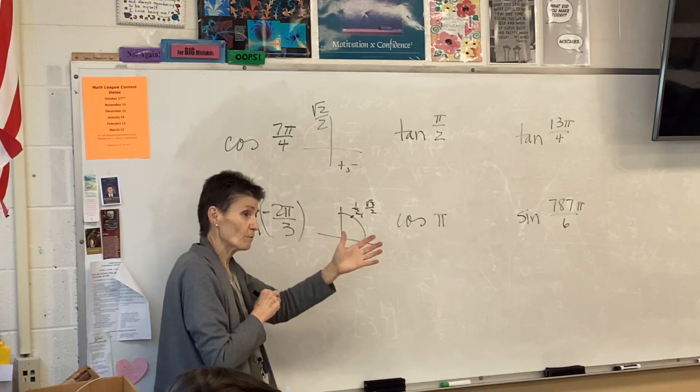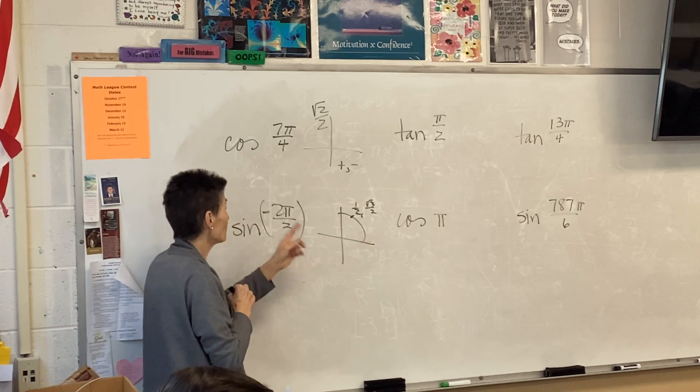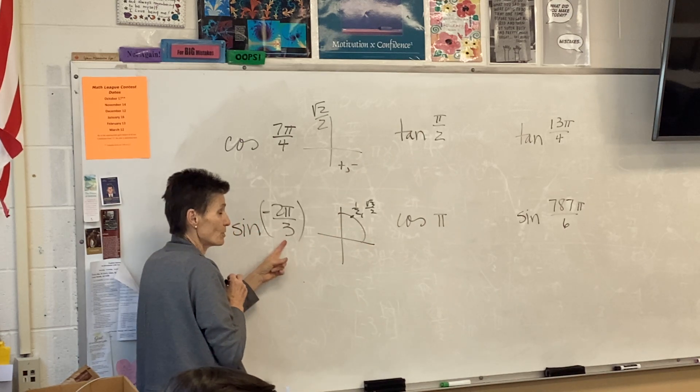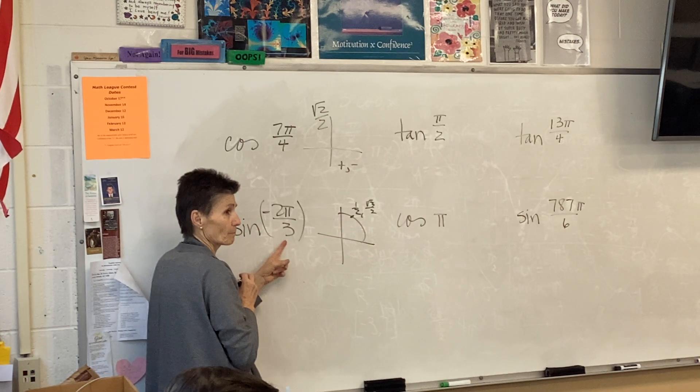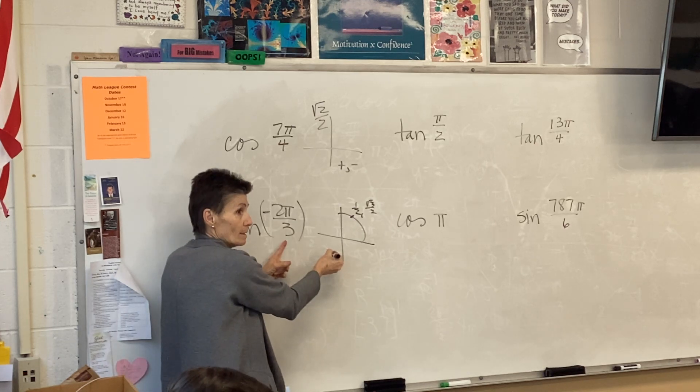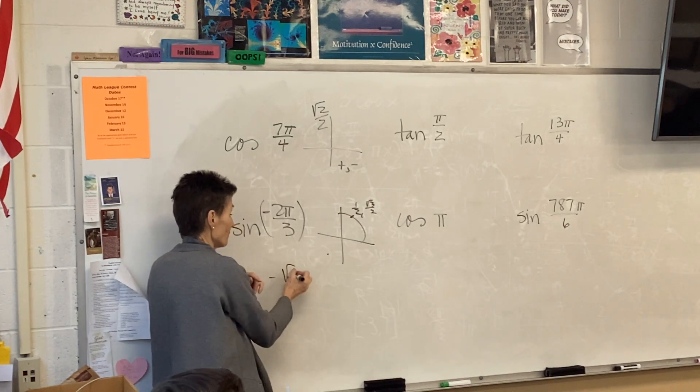So I know it's either √3 over 2 or negative √3 over 2. Where is negative 2π over 3? Right here. So the answer is going to be negative √3 over 2.